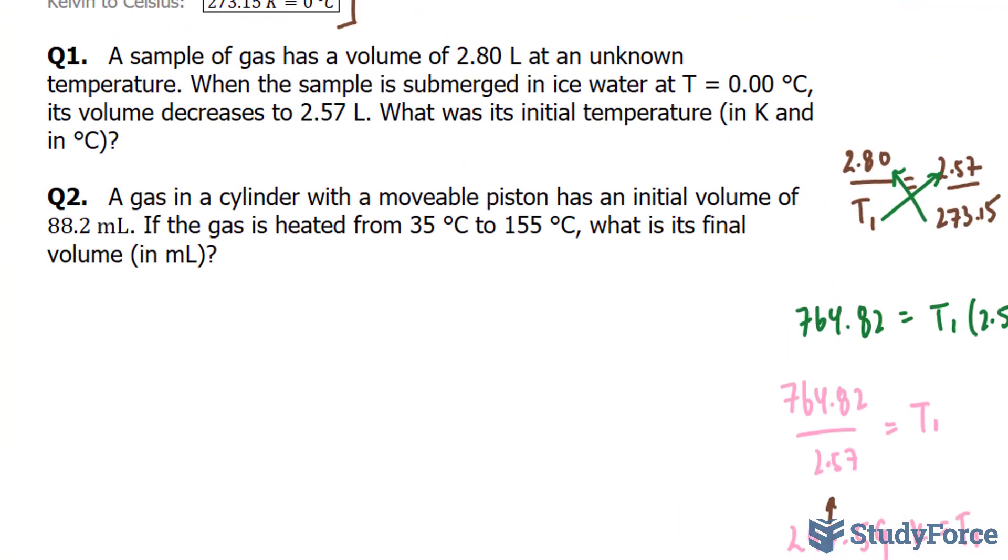Let's move on to question 2. A gas in a cylinder with a movable piston has an initial volume of 88.2 milliliters, so that's V1. If the gas is heated from 35 Celsius to 155 Celsius, what is the final volume? So, we have been given this number. We're looking for our final volume. We know that our initial temperature is 35, and it goes to a final temperature of 155.